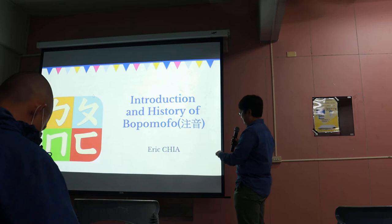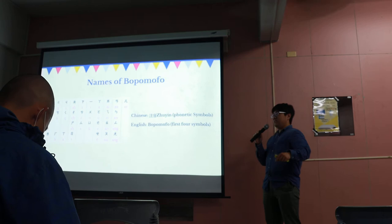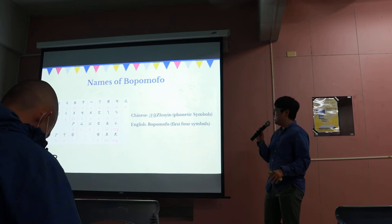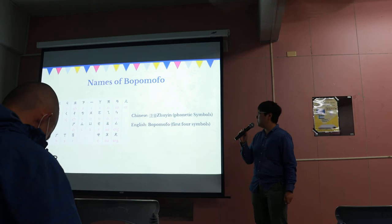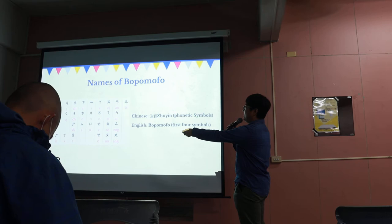And let's talk about the names of Bopomofo. So in Chinese, Taiwanese people call it Zhuyin, which literally means phonetic symbols. However, in English, it is called Bopomofo, which comes from the first four symbols of the system. So you can see: Bo, Po, Mo, Fo.